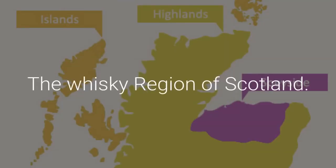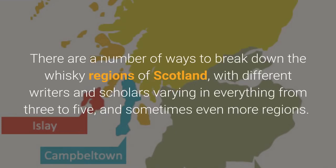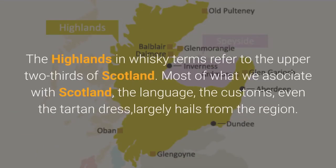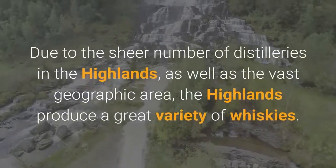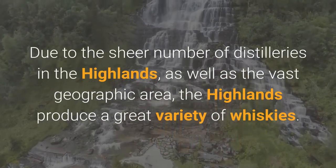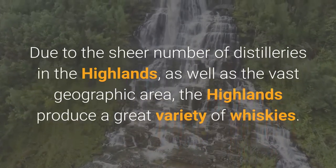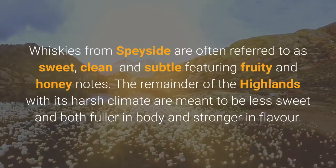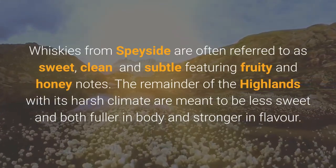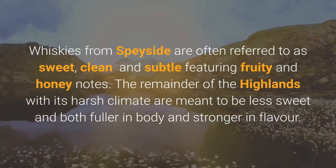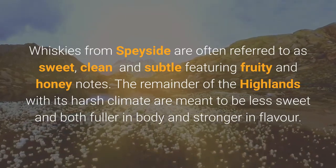The whisky regions of Scotland: there are a number of ways to break down the whisky regions of Scotland, with different writers and scholars varying from 3 to 5 or sometimes even more regions. The Highlands in whisky terms refer to the upper two-thirds of Scotland — most of what we associate with Scotland, the language, the customs, even the tartan dress, largely hails from the region. Due to the sheer number of distilleries and the vast geographic area, the Highlands produce a great variety of whiskies. Whiskies from Speyside are often described as sweet, clean and subtle, featuring fruity and honey notes, while the remainder of the Highlands with its harsh climate tends to produce less sweet, fuller-bodied and stronger-flavoured whiskies.